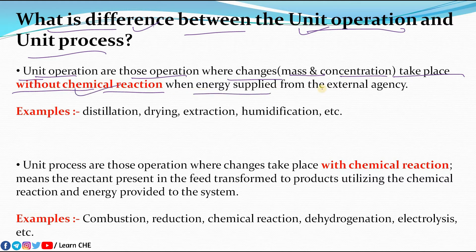If there is any change from initial to final, that change happens without chemical reaction, when energy is supplied from an external agency. What are the examples of unit operations?